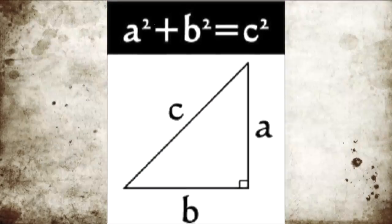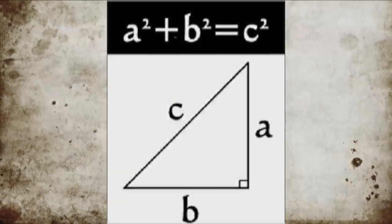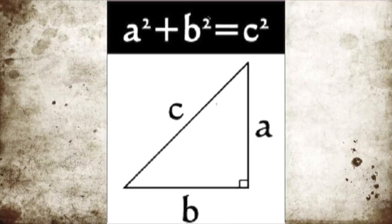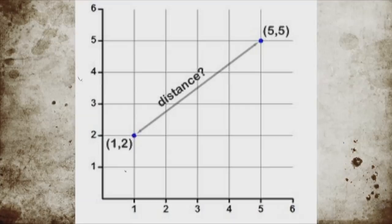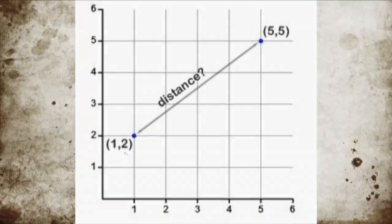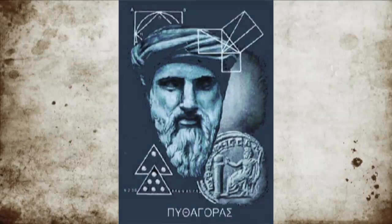Put simply, the theorem states that the squares of the lengths of the legs of a right triangle are equal to the square of the hypotenuse of that triangle. It is a simple yet extremely useful theorem in mathematics. So, who exactly was Pythagoras and how did he contrive this important theorem?